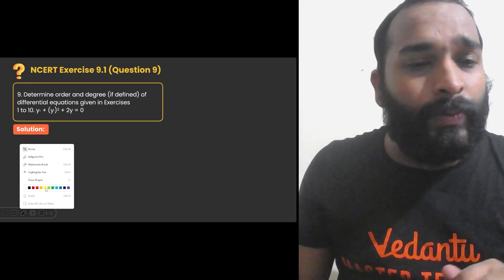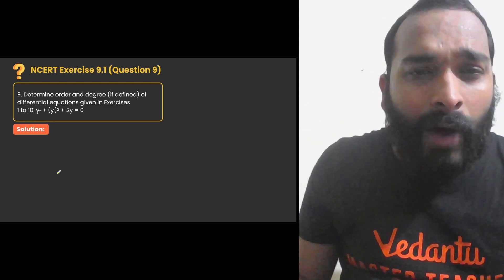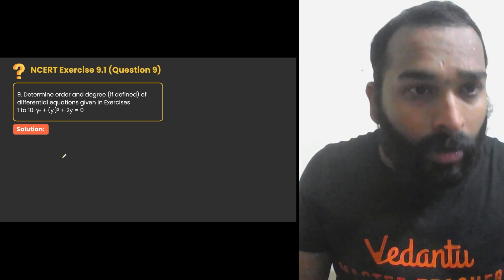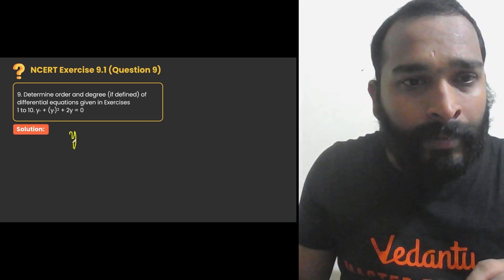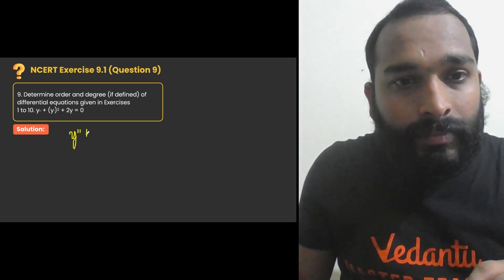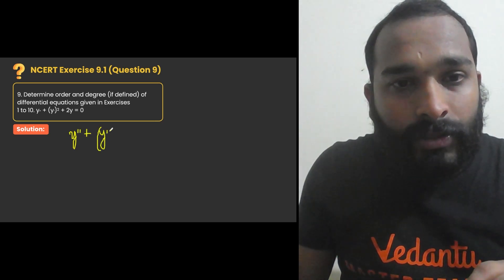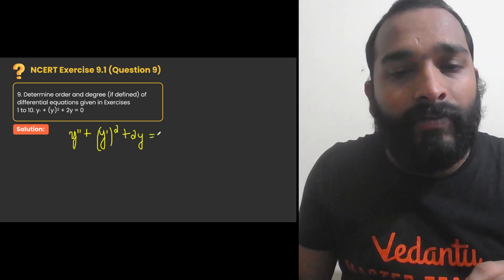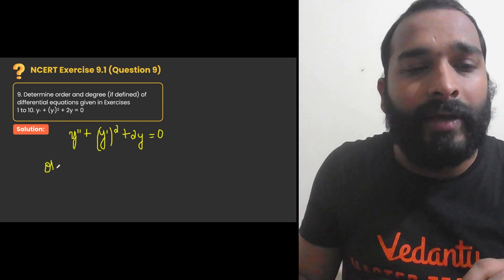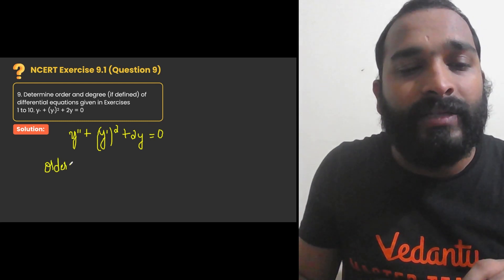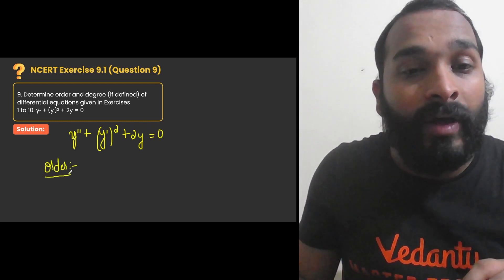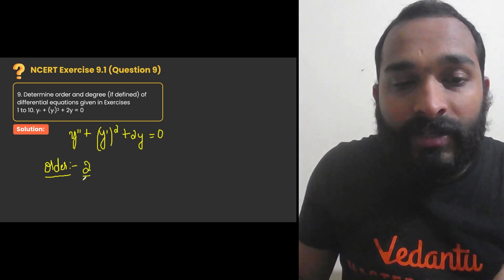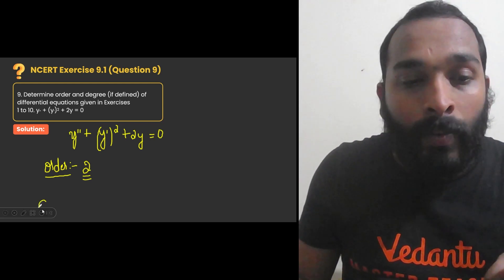In this question, they are asking us to find the order and degree of a differential equation: y double dash plus y dash whole squared plus 2y equal to 0. Whenever we get a differential equation, order is the highest derivative. The highest derivative here is y double dash. So what is the order? Order is 2.